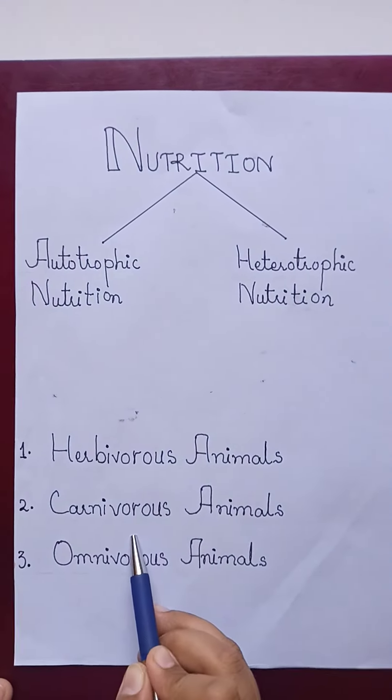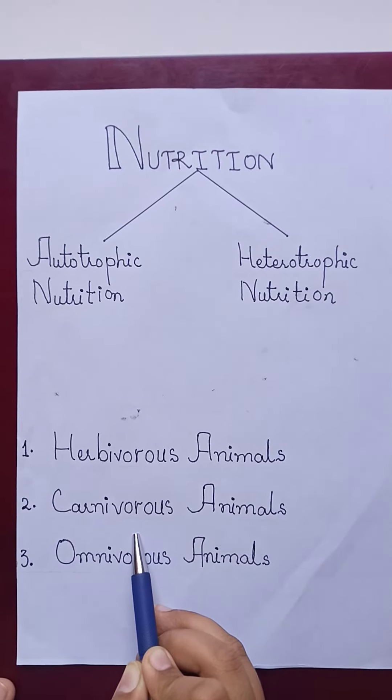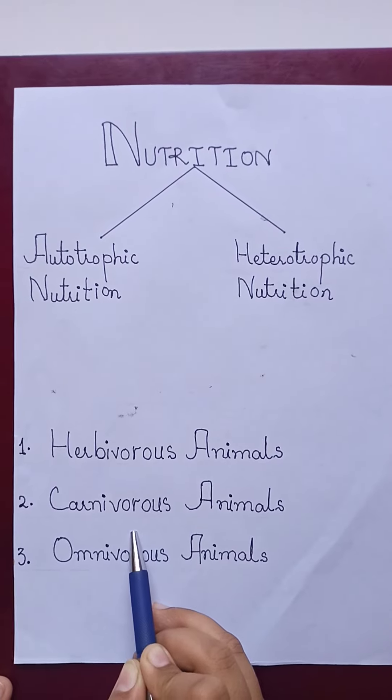Carnivorous animals: Animals which eat the flesh of other animals are called carnivorous animals. Examples are lion and tiger.